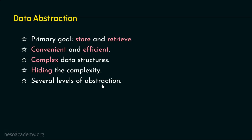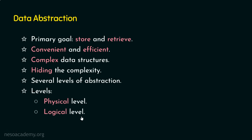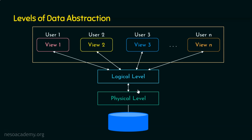In order to achieve data abstraction, we have several levels of abstraction. Just as in a three-tiered architecture we have three levels, here also we have three levels. The first level is the physical level, the second level is the logical level, and the third level is the view level, which is at the topmost, user level. There are multiple views at the view level.